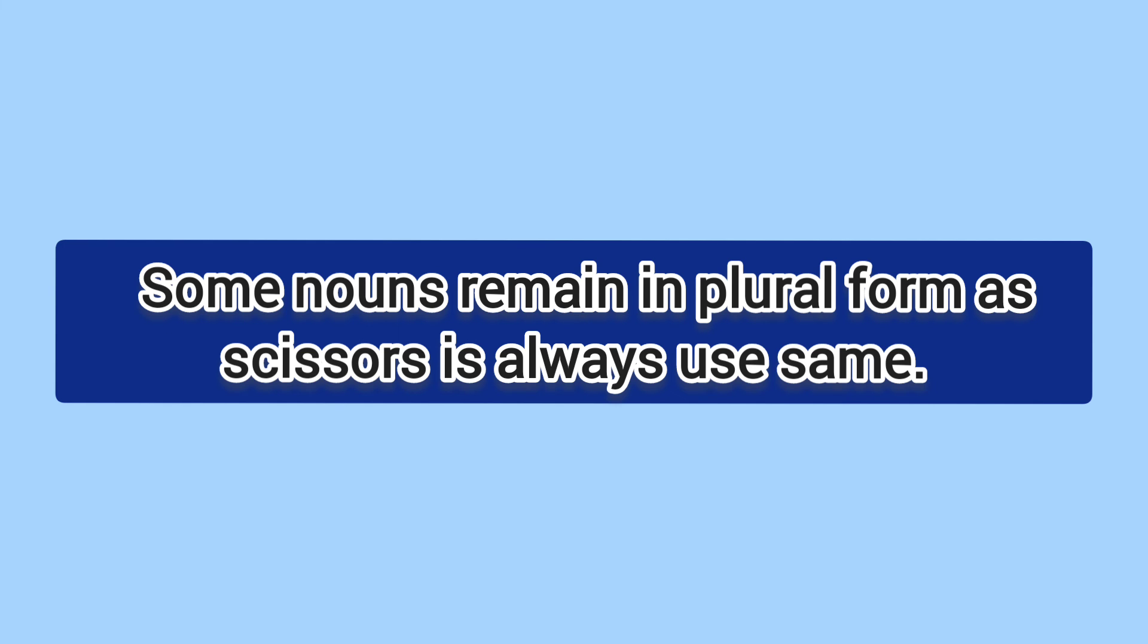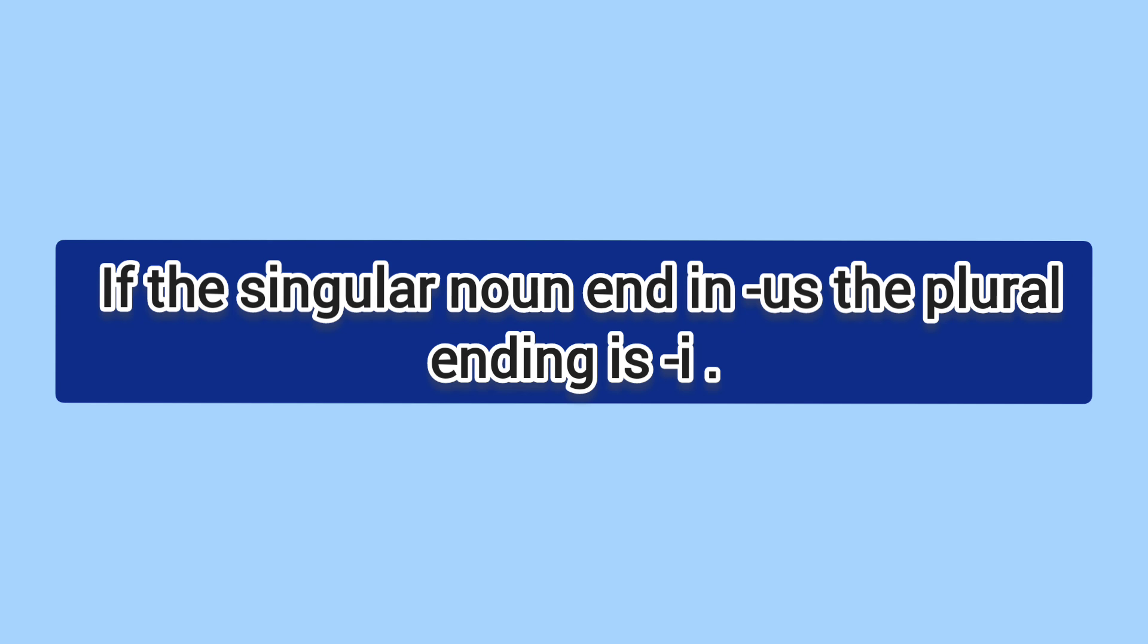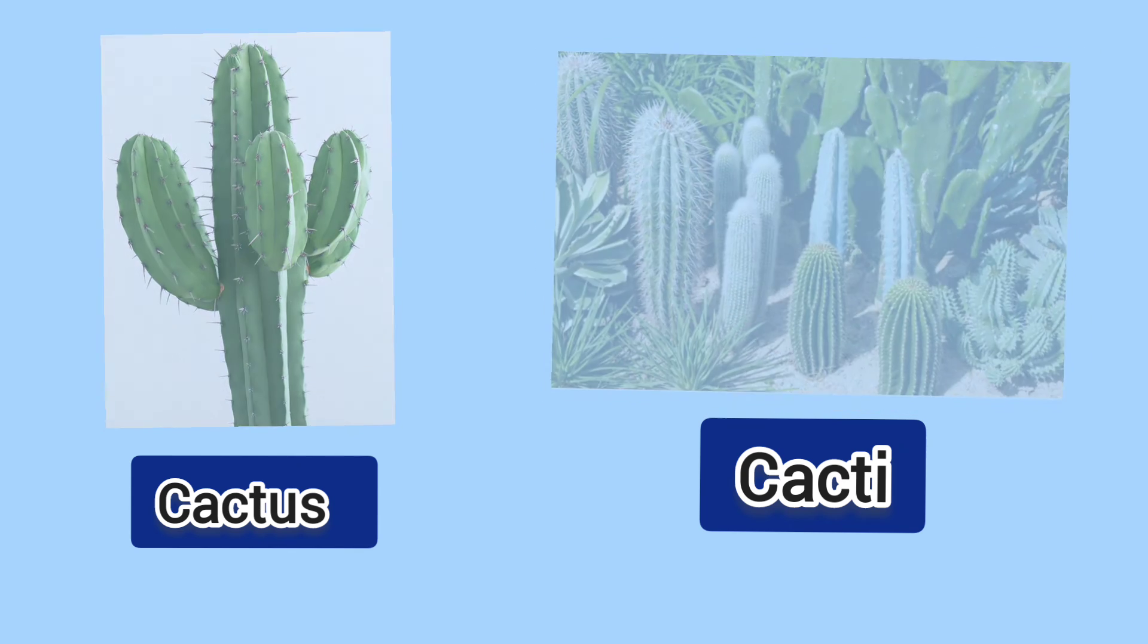Some nouns don't change to make plural form, like deer, sheep, fish. Some nouns remain in plural form as scissors is always used same. If the singular noun ends in us, the plural ending is i. For example: cactus, cacti.